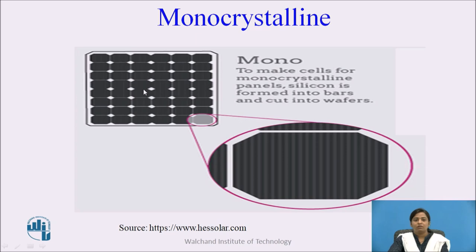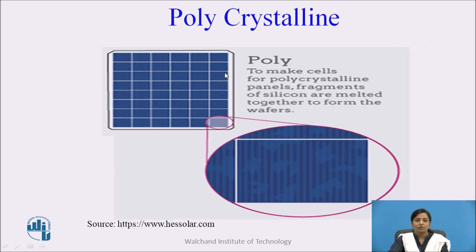There are basically two types of solar cells: monocrystalline and polycrystalline. Monocrystalline solar cells are premium solar cells that use a single crystal; the silicon is formed into bars and cut into wafers. Polycrystalline solar cells have lower efficiency compared to monocrystalline, but their advantage is lower cost. To make polycrystalline panels, fragments of silicon are melted together to form wafers. It is also called multicrystalline.